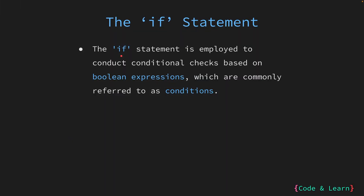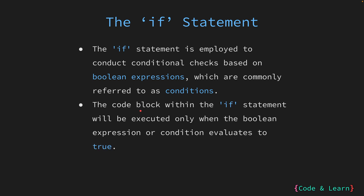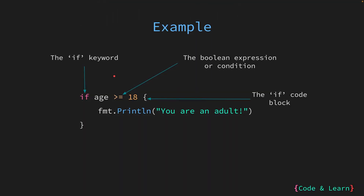The if statement is a fundamental control structure in programming. It is used to perform conditional checks based on Boolean expressions, which are essentially conditions that evaluate to either true or false. The code block within the if statement is a set of instructions or statements that are executed if the condition specified in the if statement evaluates to true. This means that the code within the if block is only executed when the Boolean expression or condition is true. Here we have an example.